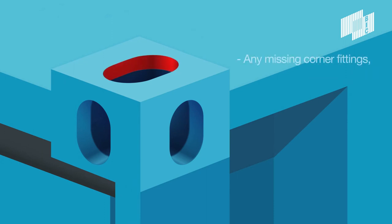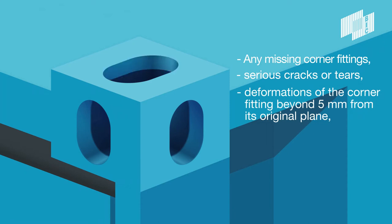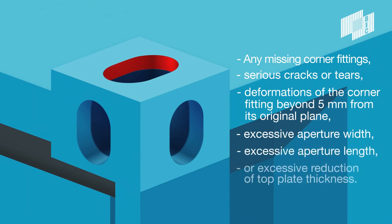Any missing corner fittings, serious cracks or tears, deformations of the corner fitting beyond 5 mm from its original plane, excessive aperture width, excessive aperture length, or excessive reduction of top plate thickness requires the container to be taken out of service immediately.